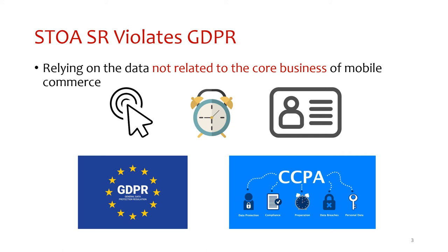However, the enforcement of GDPR and CCPA may make sequential recommendation no longer work. The reason is that current sequential recommendation in mobile commerce usually relies on data not related to the current business, such as clicking on items and dwell time on pages. As a result, users may not allow the recommender to use their interaction data due to privacy concerns.